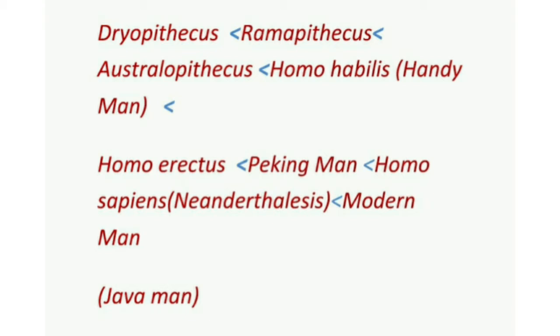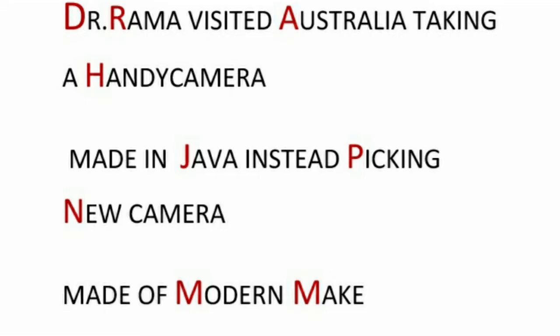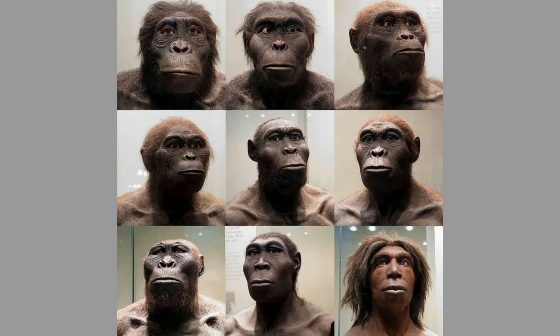In the mnemonic: 'Peking' stands for Peking Man, 'new' stands for Neanderthal, 'camera' for Cro-Magnon, and 'modern make' for modern man. Next come the times of origin of these human ancestors.